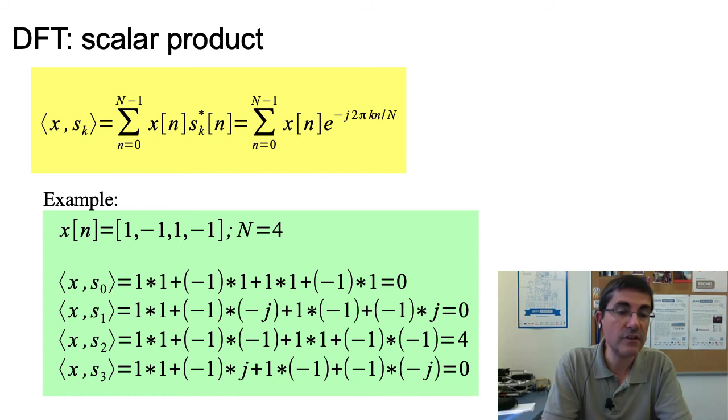which again means that this frequency is not present in this X signal. But, when we change to S_2, and we do the scalar product, the result is 4, which means that basically this X signal is this sinusoid, is completely present in this sinusoid. And we get the result of 4, which is the sum of all the samples. And then by S_3, again, is equal to 0. So that means that we have computed the DFT of x[n], and we have obtained that is equal to 4 for k=2, and is equal to 0 for the rest. Meaning that we have the presence of the frequency k=2.